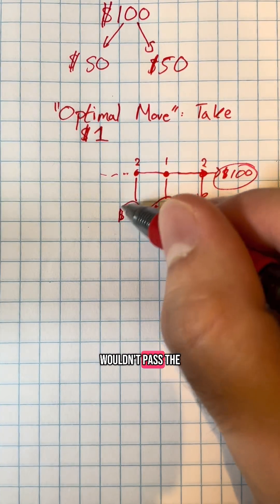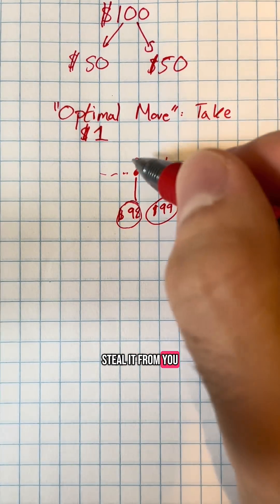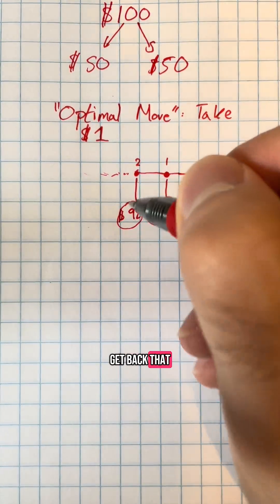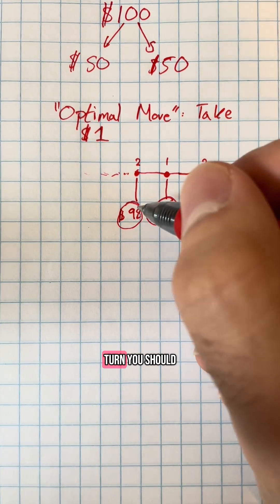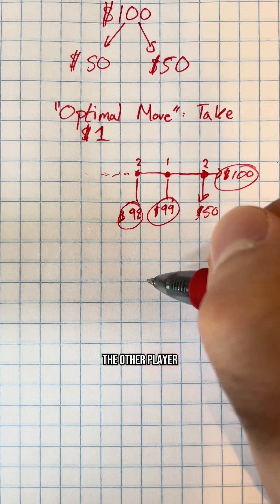Player two, knowing this, wouldn't pass the ninety-eight dollars to you to give you the option to steal it from them. And this would continue on and on until you eventually get back that from player one on your first turn, you should never even play the game in the first place, because it will always be optimal to steal from the other player.